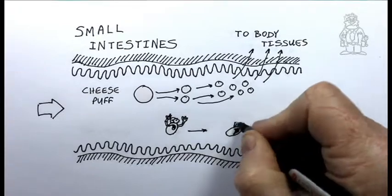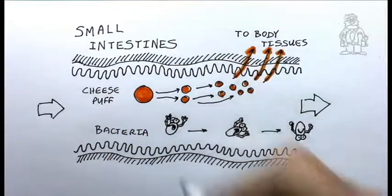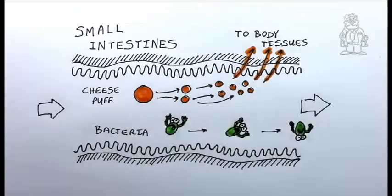Bacteria in the gut help us process vitamins and minerals and also aid in regulating the immune system. There are over 500 different species of bacteria in there.